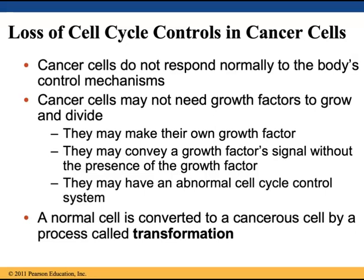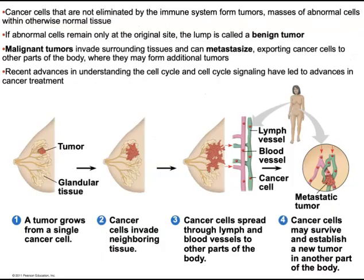Cancer cells do not respond normally to the body's control mechanisms. In fact, cancer cells may not even need growth factors to grow and divide — they may be able to make their own growth factors, convey a growth factor signal without the presence of a growth factor, or have an abnormal cell cycle where checkpoints no longer halt division of unhealthy cells. When a normal cell is converted to a cancerous cell, this process is called transformation — also known as malignant transformation or tumorigenesis. Cancer cells that are not eliminated by the immune system form tumors: masses of abnormal cells within otherwise normal tissue. If abnormal cells remain only at the original site, the lump is called a benign tumor. Malignant tumors invade surrounding tissues and can metastasize — spreading from a primary site to a secondary site.